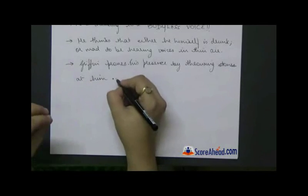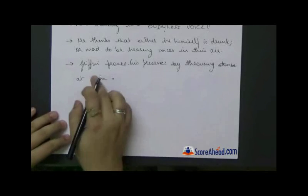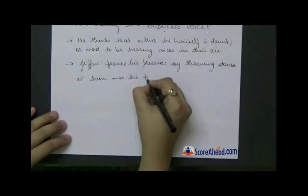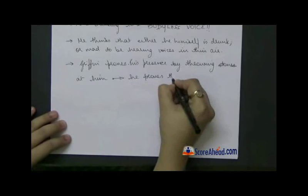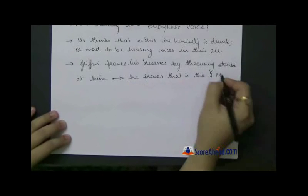Then he realizes that somebody is there. I am not mad, it is actually some person whom I cannot see. So Griffin proves his presence by throwing stones at him and he proves that he is the invisible man, he proves the fact that he is invisible.